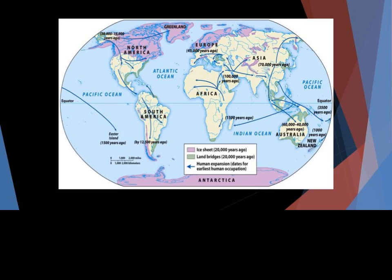This map shows the ice sheets about 20,000 years ago. Antarctica is covered, and if you notice, all of Northern Europe, parts of Northern Asia, Western China, and some of Central Asia are covered — that's because of the higher elevation. Essentially all of what is now Canada, Greenland, and even parts of the United States were covered in ice about 20,000 years ago. You'll also notice the land bridges that existed at about the same time, because those ice sheets hadn't melted yet.